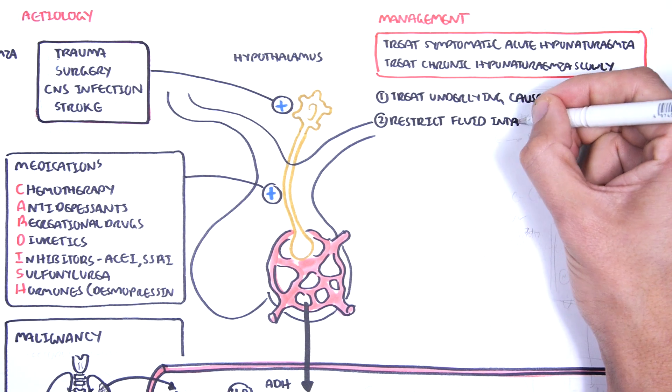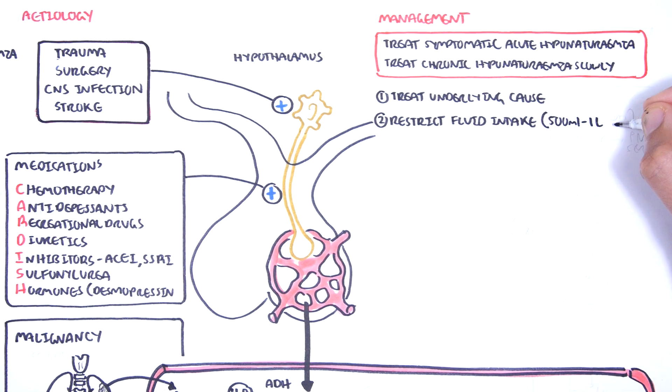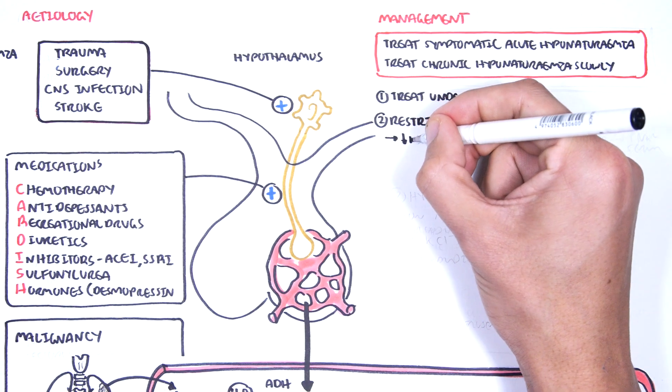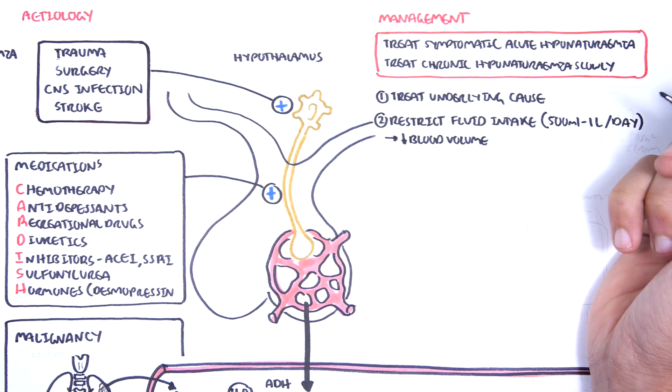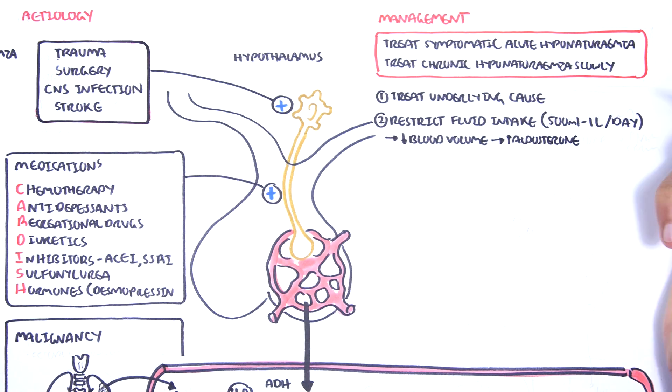Number two, restrict fluid intake. 500 mls to 1 liter a day is good. This will lead to a reduction in blood volume, an increase in aldosterone, and so will hopefully increase sodium retention.